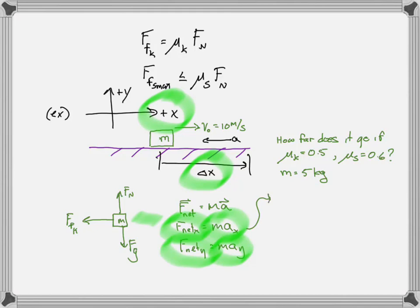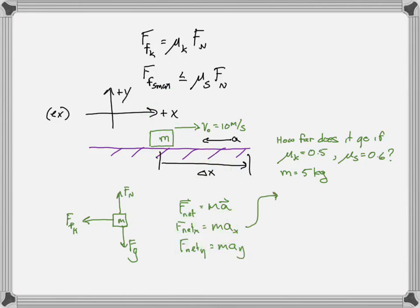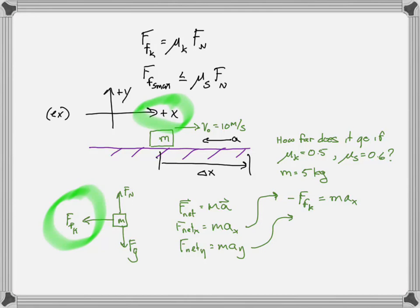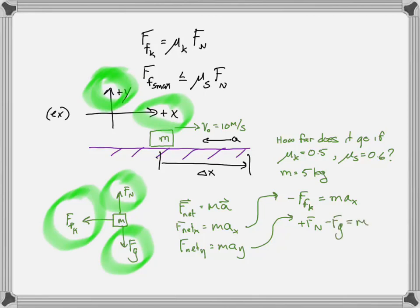For F_net_X: the only force with an x-component is friction, pointing in the minus x direction, so F_net_X = −FFK = m·ax. For F_net_Y: the normal force FN points in the plus y direction, and gravity FG points in the minus y direction, so FN − FG = m·ay. I've just plugged in the left-hand side from the free body diagram.